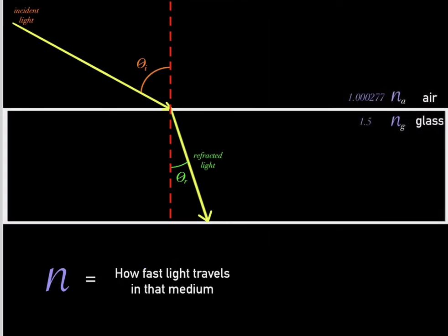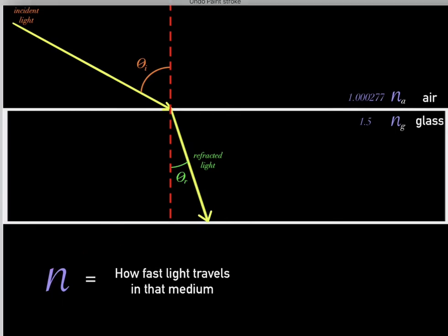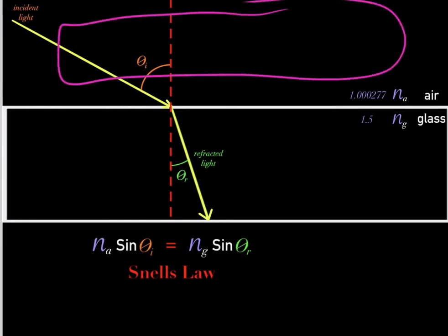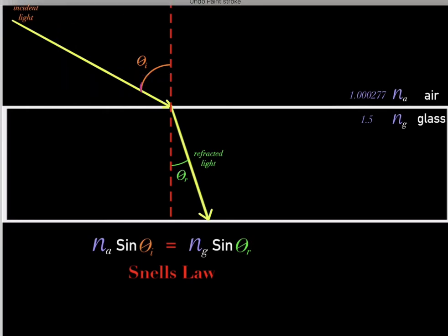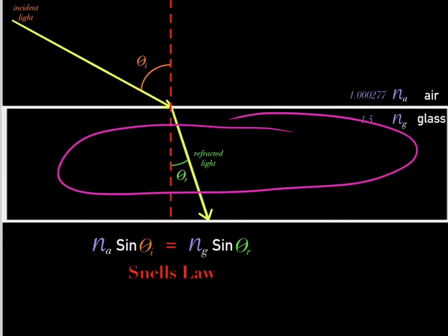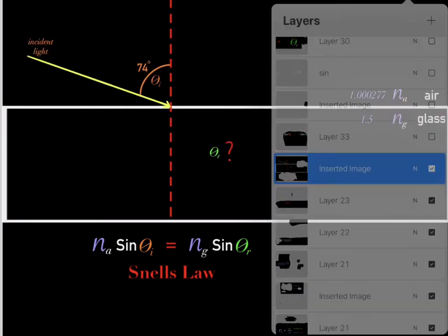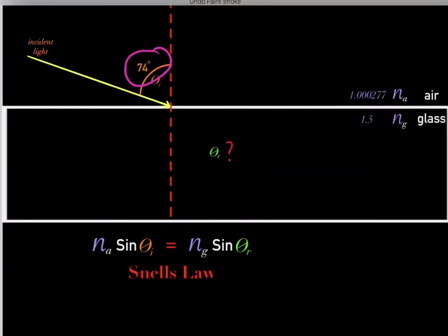So it's very straightforward to determine the index of refraction for mediums, and this index of refraction tells us how fast light travels in that medium. Now that we understand what indexes of refraction are, we can begin to use Snell's law. Let's say we have incident light with an angle of incidence of 74 degrees.